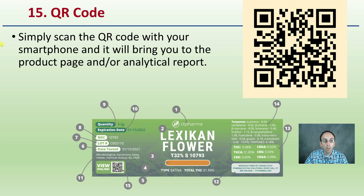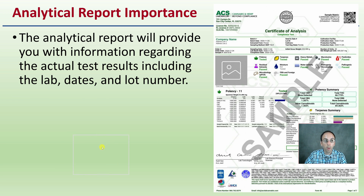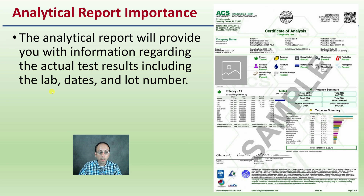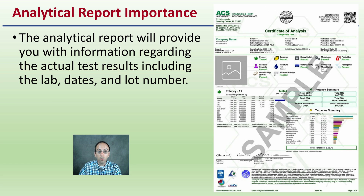Lastly, we have number fifteen — the QR code. Simply scan the QR code with your smartphone and it will bring you to the product page and/or analytical report. That analytical report is very important because it's the original document that these numbers were generated from. It provides you with information regarding the actual test results, including the lab, the dates, and the lot number — kind of like the official paperwork that confirms the numbers on the label. You can also confirm what lab was used, their license number, and the lot number. If you had any questions, you could contact the lab directly to confirm they did test your specific product. It's a great way to be an informed consumer — checks and balances ensure you're getting a product of a known, tested basis for the numbers represented on that label.